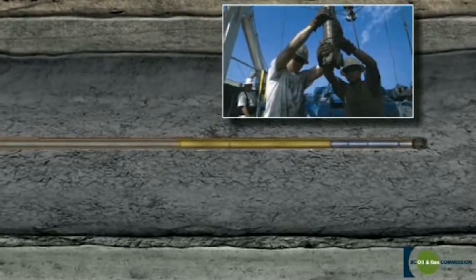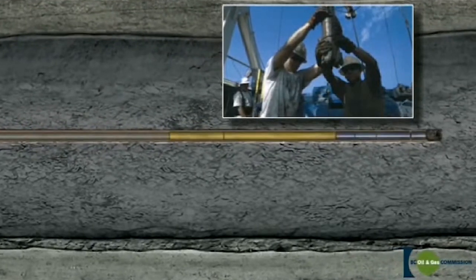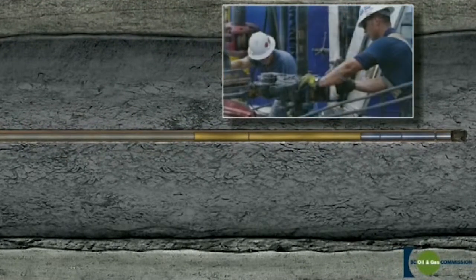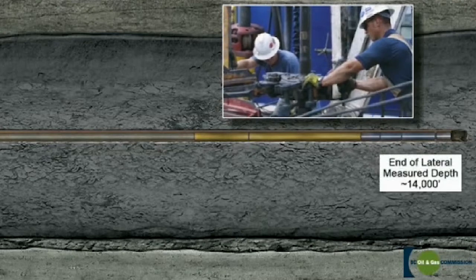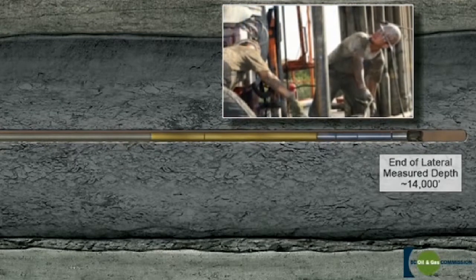At various stages of drilling, the pipe is taken out of the hole for tool and bit changes and put back in. This process is called tripping pipe.